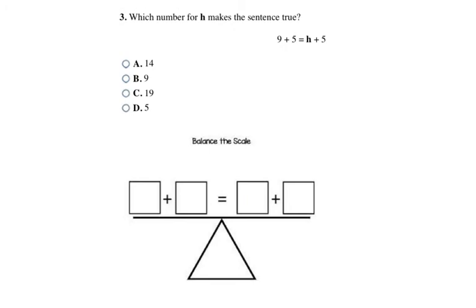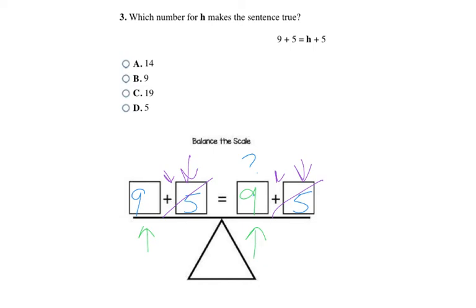This next problem has a little more going on both sides of the equation. On the left side I have 9 plus 5, and on the right side I have H plus 5. Since I have plus 5 on both sides, and both sides are equal, the other part must also be equal — meaning H has to be 9. That's the only way to keep them balanced, so choice B, 9, is my final answer.